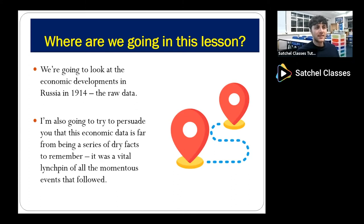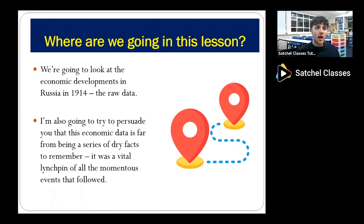There are two things we're going to do in this lesson. One is to look at some raw data — the facts, figures, graphs and statistics around economic developments up to 1914. But there's also a second thing: I'm going to try to persuade you that although this raw data may appear dry and uninteresting, it is actually crucial to understanding much wider events, including really momentous events like the First World War and the Russian Revolution of 1917. What seems like just a set of raw economic data actually underlies all of those wider developments.